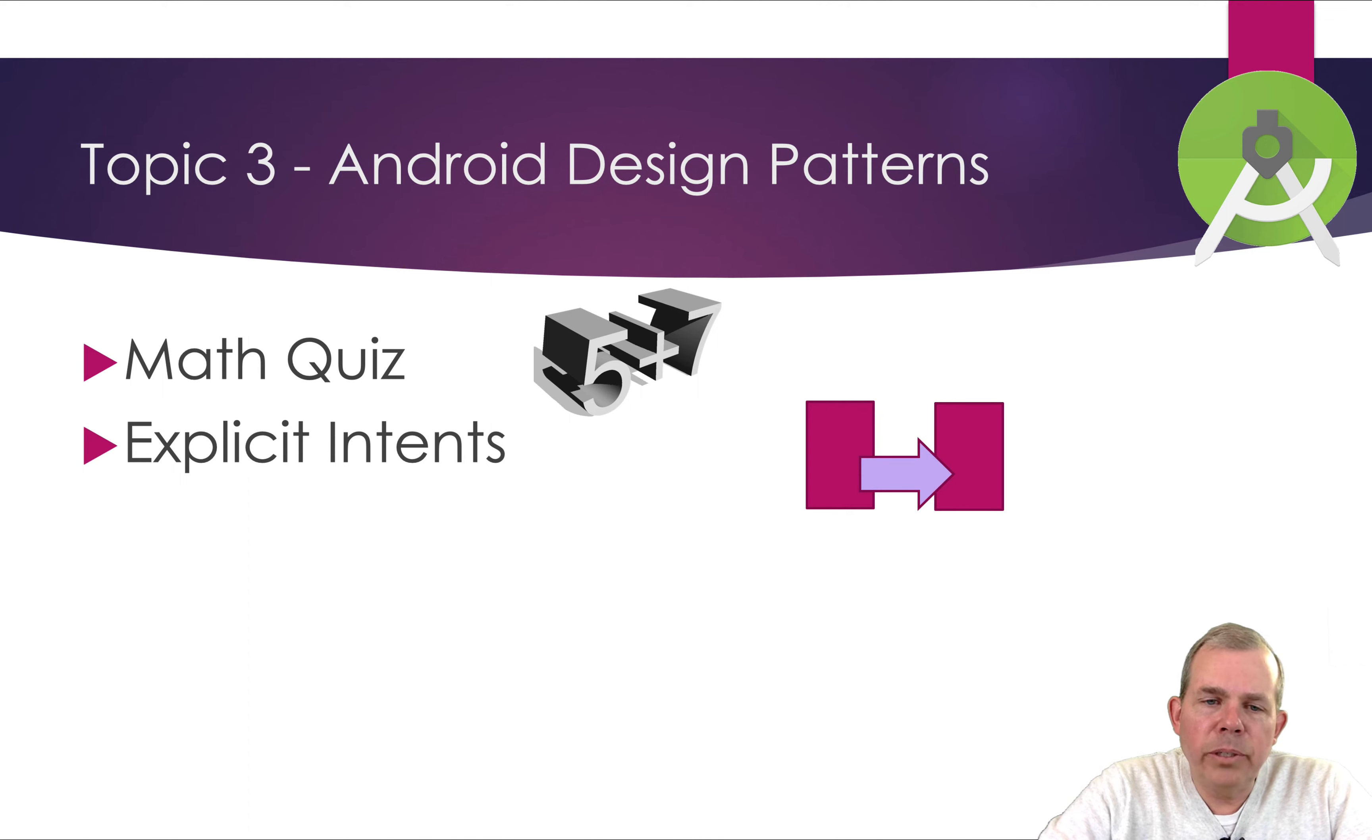We'll also talk about explicit intents. An explicit intent says, I want to go from page one of an application to page two. That sounds very simple, but there's a process that you need to learn called intents. It means intending to turn the page. So it's not a guarantee, but it will probably work if you program your program correctly.